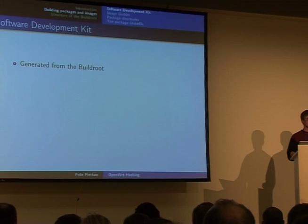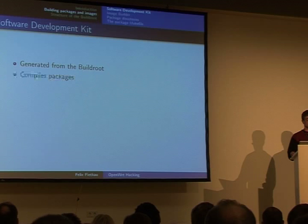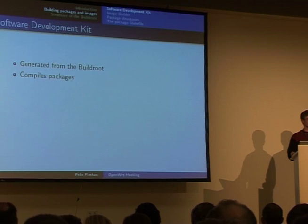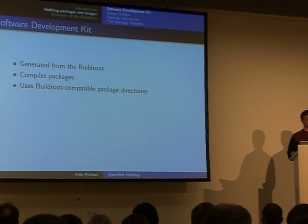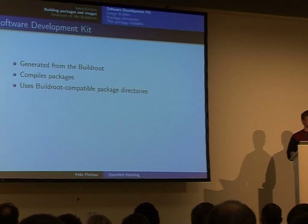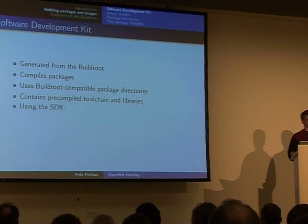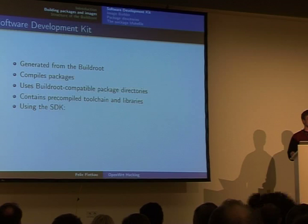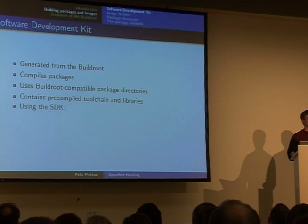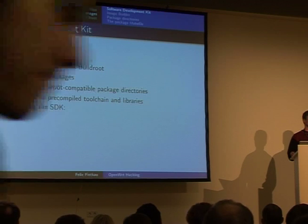Now to the developer tools for special cases. The first is the software development kit, generated from the build root at build time if you select it in the menu configuration. Its main purpose is to compile packages without all the hassle — it contains a precompiled toolchain and all libraries, and uses build root compatible package directories. It is a stripped-down version of the build system that builds packages and creates binaries. It's mainly important for maintaining a package across several versions of OpenWRT, especially since some library changes make it impossible to run newer packages on the older White Russian system.